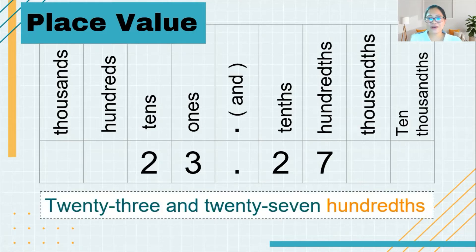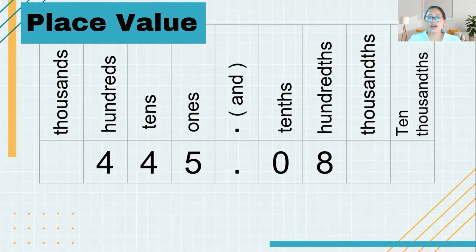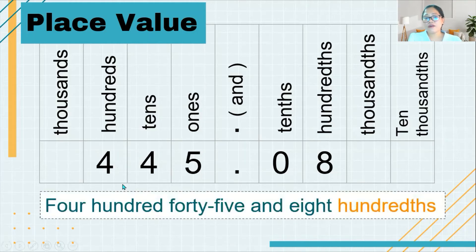Now let's go to our last example. We have 445.08, which has 445 in the hundreds place, so we say 'four hundred forty-five and.' We have a zero here so we don't need to read it. We say 'four hundred forty-five and eight,' and then the place value, which is hundredths. So we say 'four hundred forty-five and eight hundredths.' That's how we read numbers with decimal points.